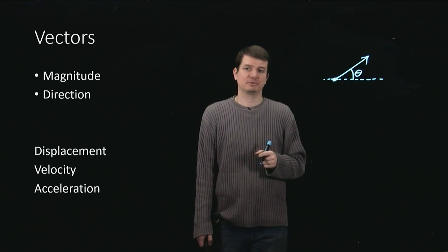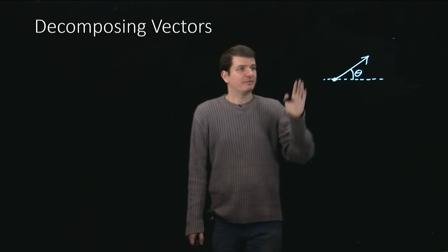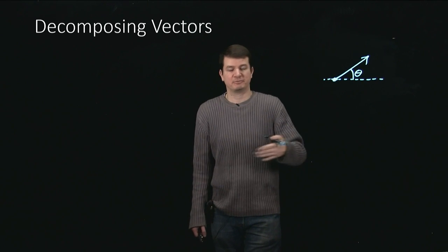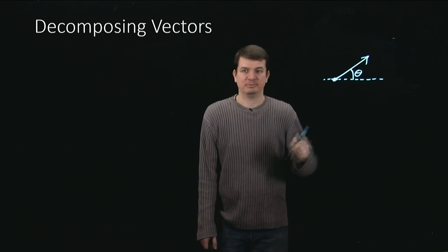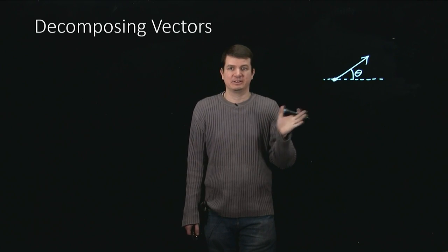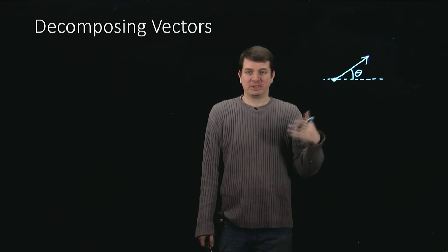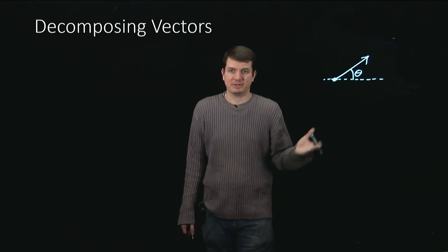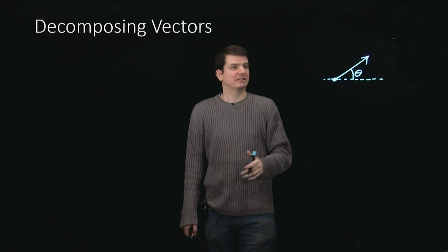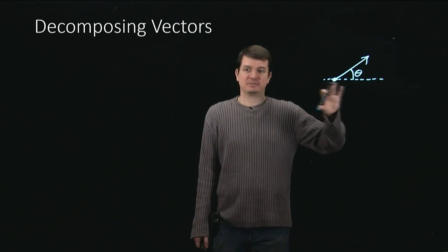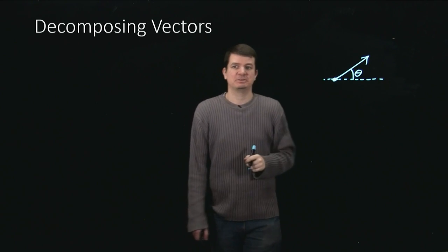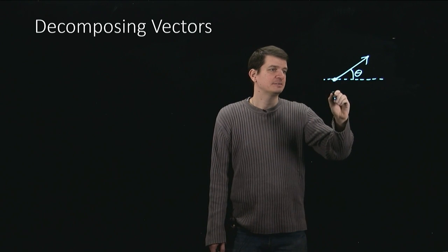One of the most common things we need to do is decompose vectors. For example, if I'm talking about this displacement vector, suppose I was giving that information to you so that you could also get from my house to the recording room. It might not be so useful to just give you a direction as an angle and a length, because most roads are oriented in an east-west-north-south kind of way. If you just go diagonally, you'll be cutting through buildings — that's not really the best way to try driving. So it might be better if I could tell you: go so much east, and then go so much north, and then you'll be there. In order to do that, we need to decompose this vector into how much east as well as how much north.